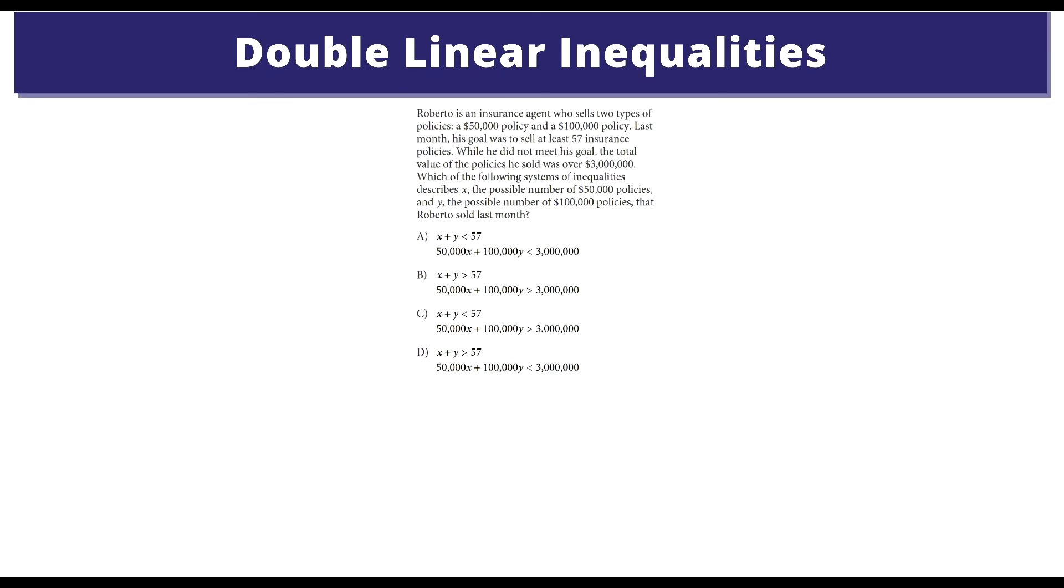On to the next one. Roberto is an insurance agent who sells two types of policies: a $50,000 policy and a $100,000 policy. Last month his goal was to sell 57 insurance policies. While he did not meet his goal, the total value of policies sold was over $3 million. Which of the following systems of inequalities describes x, the possible number of $50,000 policies, and y, the possible number of $100,000 policies that Roberto sold last month? Let's highlight the important parts. His goal was to sell at least 75, but he did not reach his goal of at least 75. But he did sell over the $3 million mark.